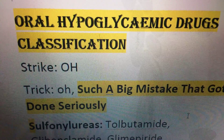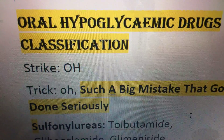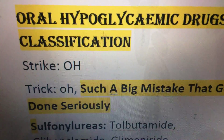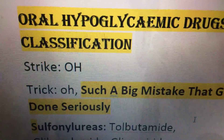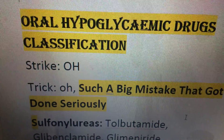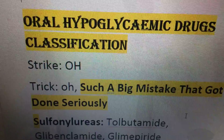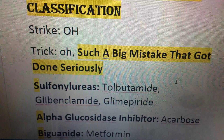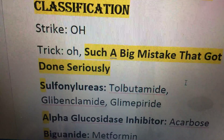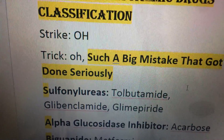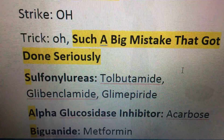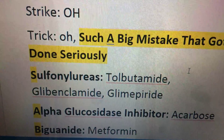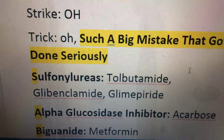Oral hypoglycemic drugs classification — OHO is what comes to mind. With this interesting mnemonic, we have the following: sulfonylureas, with drugs tolbutamide, glibenclamide, and glimepiride.